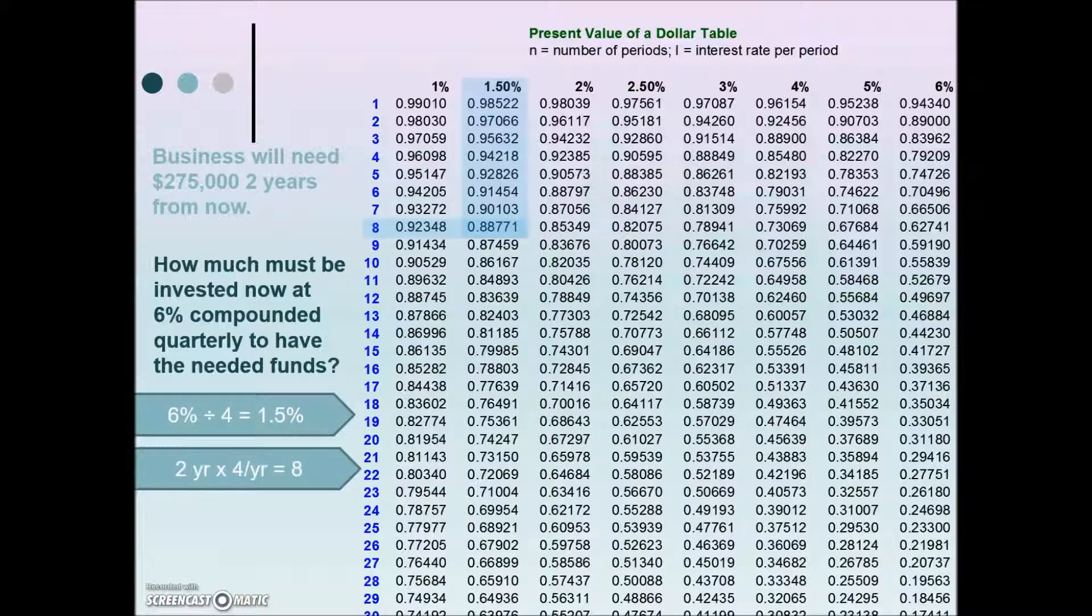Here's those calculations shown here: 6% divided by 4 is the 1.5% for your i, and your n, 2 years times 4 times per year for quarterly gives us 8. Where those two intersect, we'll use that value times our future value, in this case $275,000, to arrive at the present value.